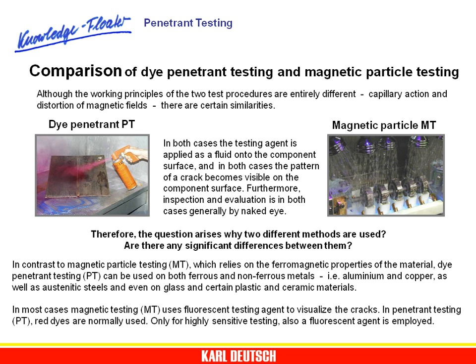In contrast to magnetic particle testing, which relies on the ferromagnetic properties of the material, dye penetrant testing can be used on both ferrous and non-ferrous metals. For example, on aluminum and copper as well as austenitic steels, and even on glass and certain plastic and ceramic materials.